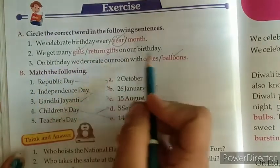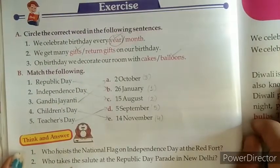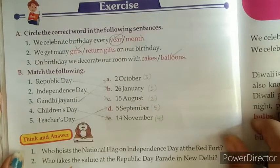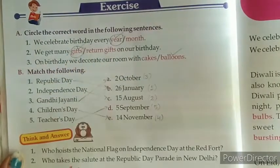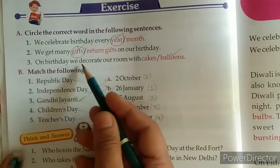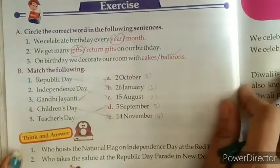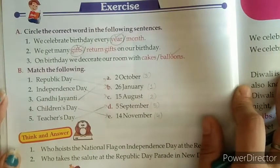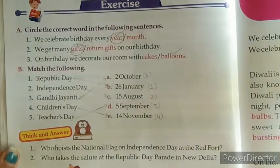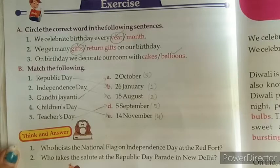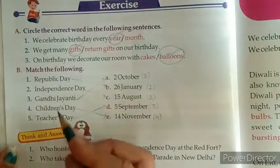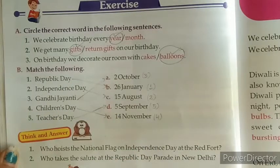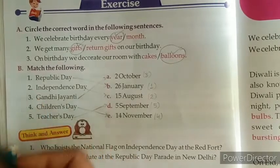Next one: we get many gifts or return gifts on our birthday. On birthday, we decorate our room with cakes or balloons. On birthday we decorate our room with balloons — circle 'balloons'. On birthday we decorate our room with balloons.